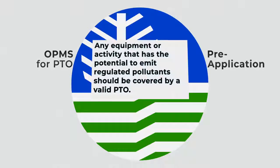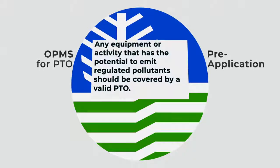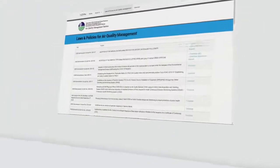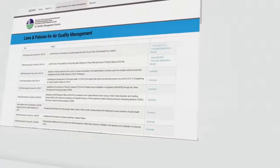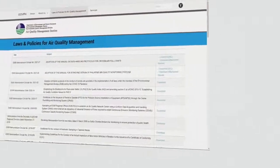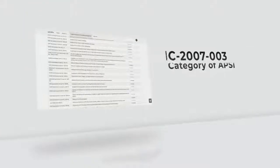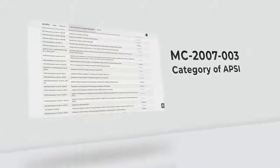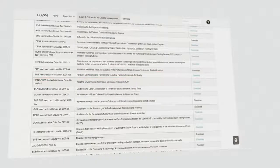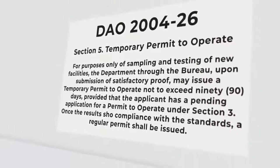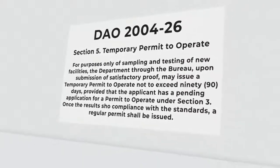Any equipment or activity that has the potential to emit regulated pollutants should be covered by a valid PTO. To know if you are required to secure a PTO, please head on to air.emb.gov.ph, then go to the Laws and Policies for Air Quality Management tab, then download EMB Memorandum Circular No. 2020-17 and read Annex C. Regarding the category of your APSI, download EMB Memorandum Circular No. 2007-003 and view Annex 2. Reminder: new applications required for emission testing must secure a Temporary Permit to Operate or TPTO.